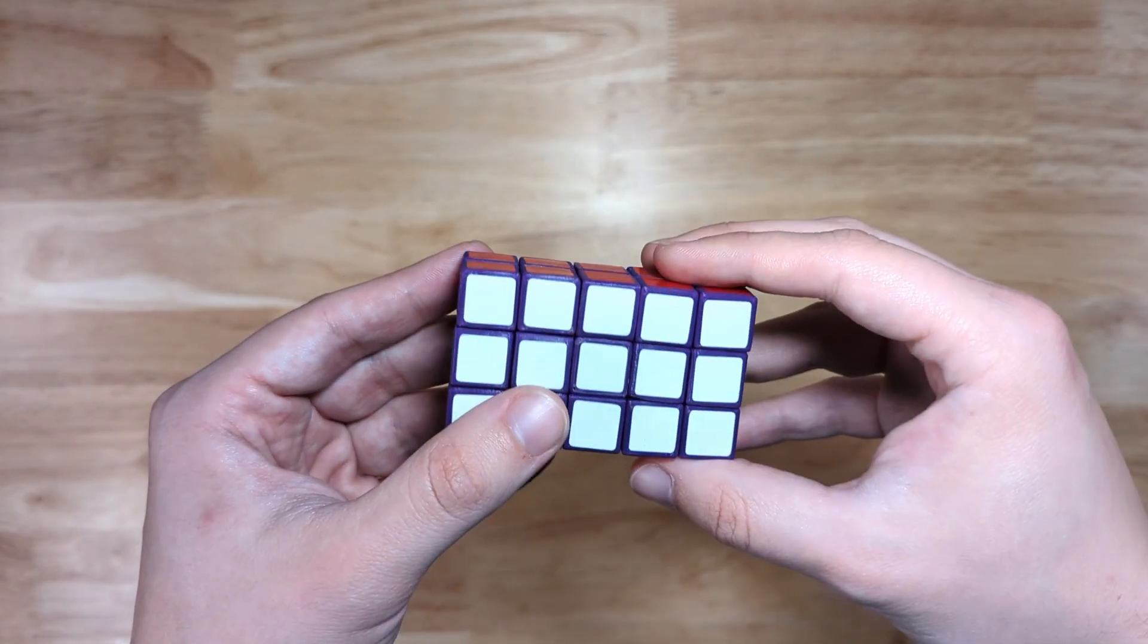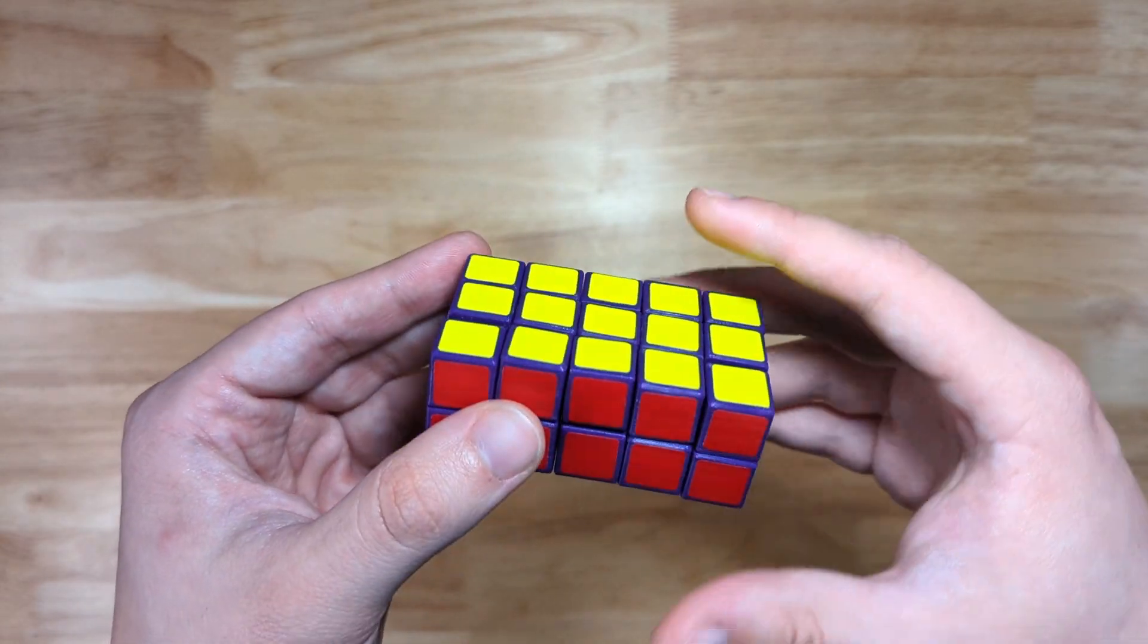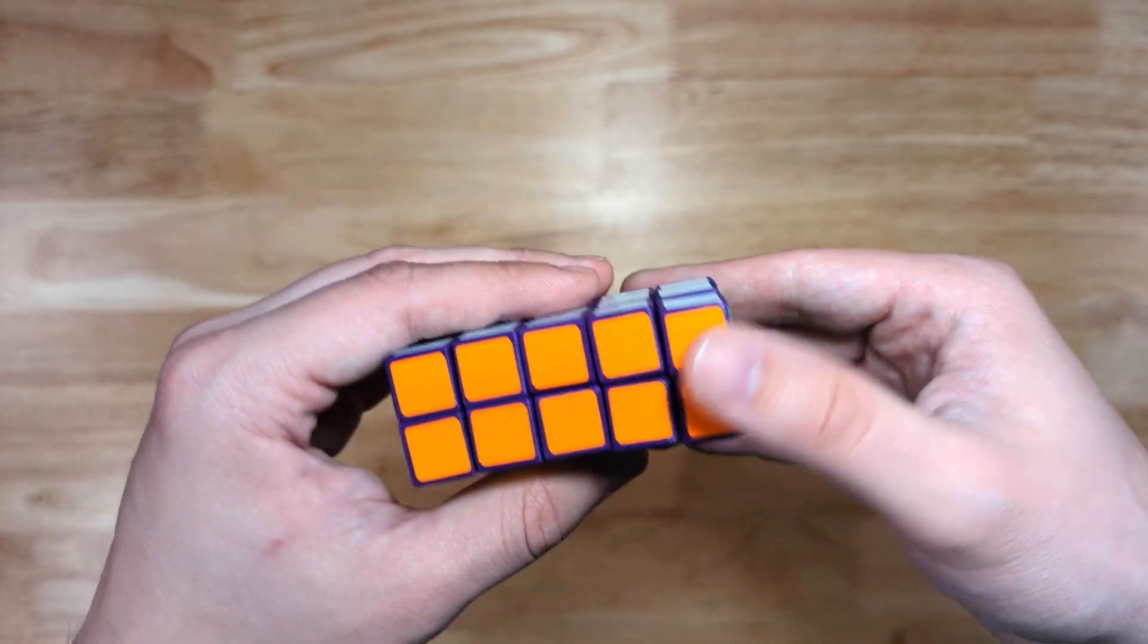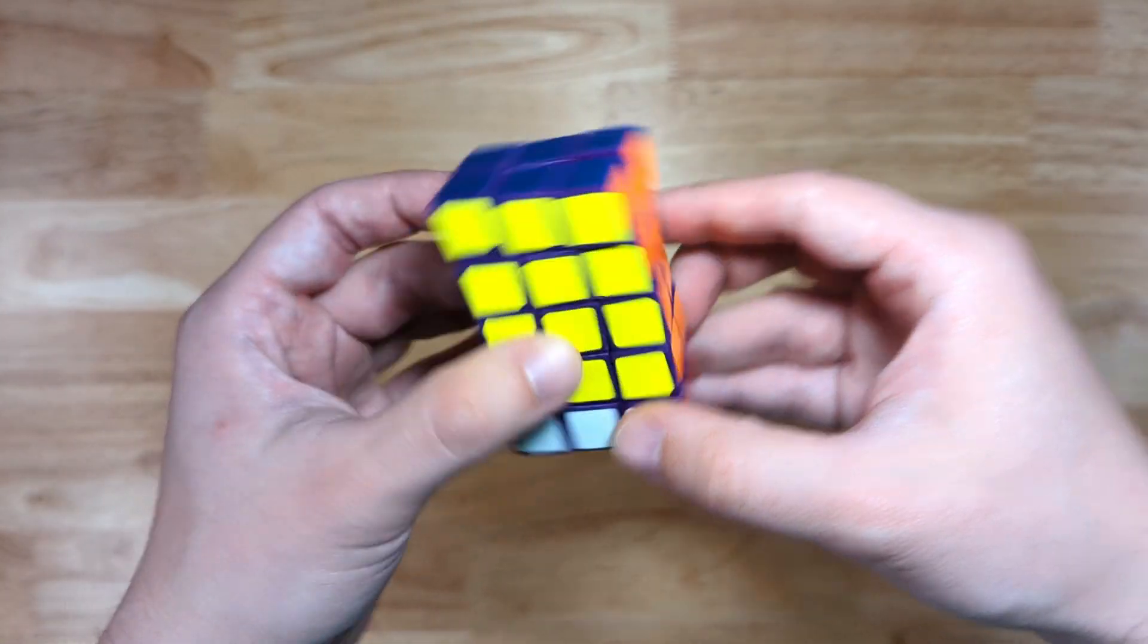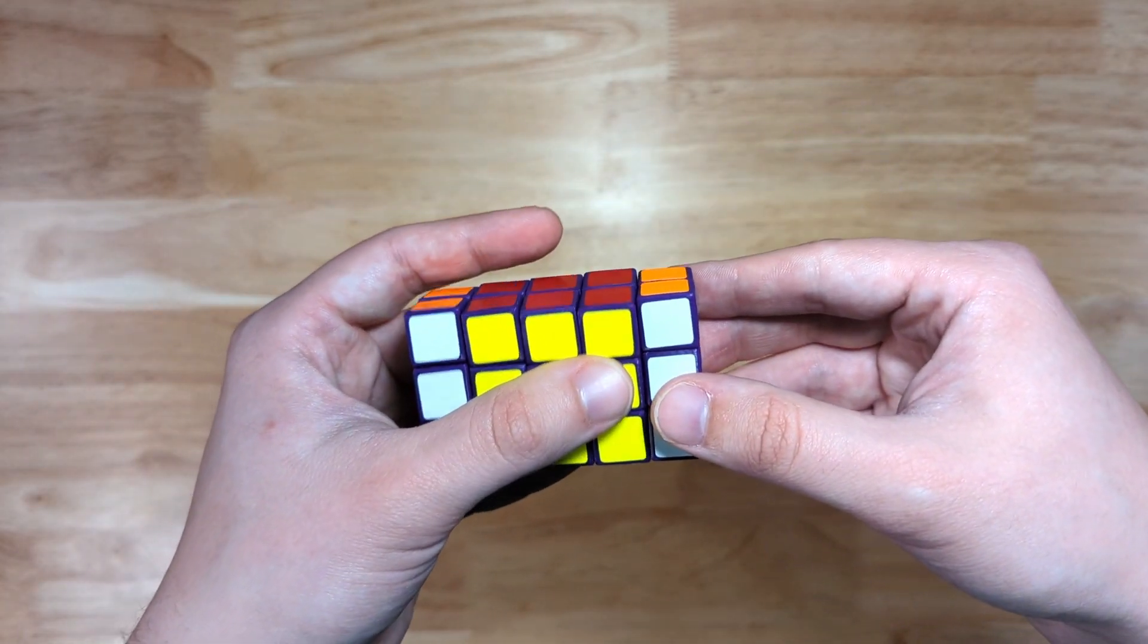All right, so it's finally time to scramble the Mini 2x3x5. As with any cuboid, you typically would want to scramble it without changing the shape first, so you can maximize the outer layers getting scrambled, and then you'll shapeshift. So, let's do that.